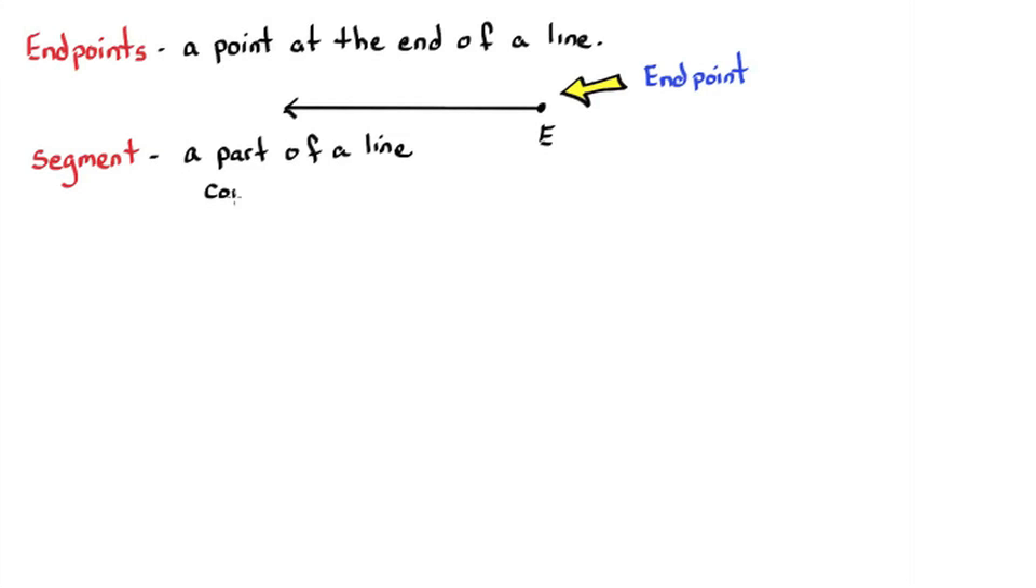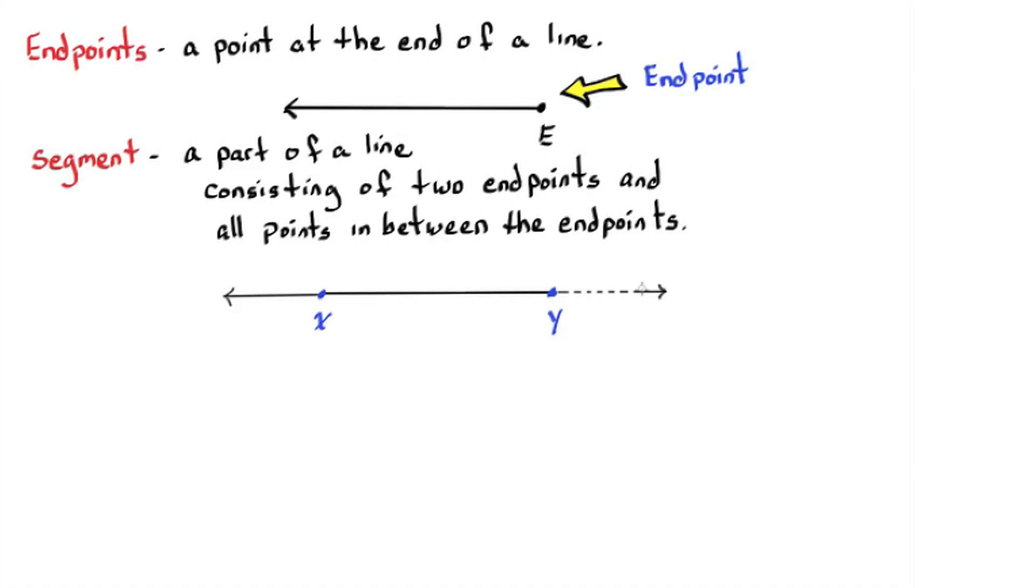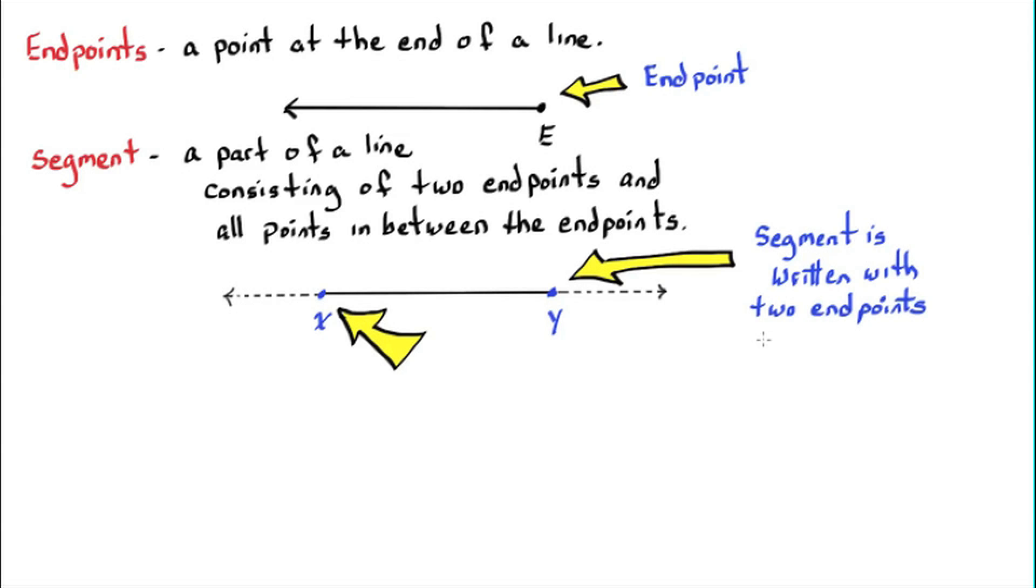Segment. A part of a line consisting of two endpoints and all points in between the endpoints. So here I have point X and Y, and the segment consists of all points in between. Segment is written with two endpoints with a line on top with no arrows. This is segment XY.